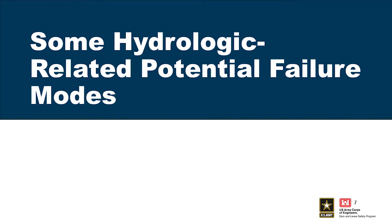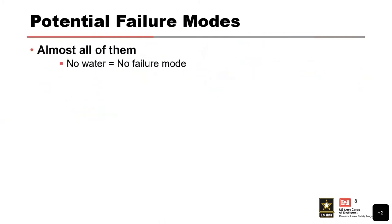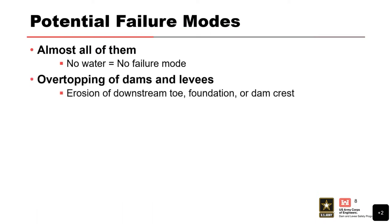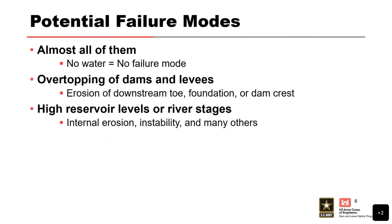Now let's talk about some hydrologic-related potential failure modes. Spoiler alert: almost every single PFM has to do with hydrologic loading, because if we don't have water, in most cases we don't have a failure mode. Types of PFMs related to hydrologic loading include overtopping of dams and levees, erosion of the downstream toe and foundation, and the dam crest itself. If we have high reservoir levels or river stages, we can also have failures such as internal erosion and instability.